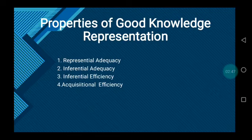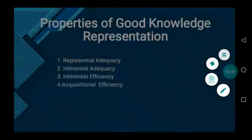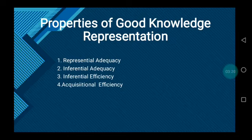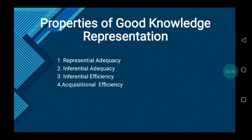A good system for the representation of structured knowledge in a particular domain should possess the following four properties. First is representational adequacy — the ability to represent all kinds of knowledge needed in the domain. Second is inferential adequacy — the ability to manipulate the represented structures and infer new structures. Third is inferential efficiency — the ability to incorporate additional information into the knowledge structure to aid the inference mechanism. Lastly is acquisitional efficiency — the ability to acquire new information easily, either by direct insertion or by program control.